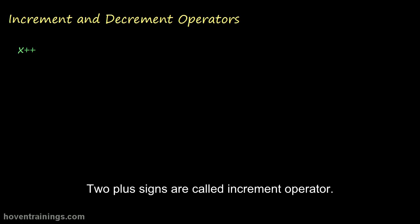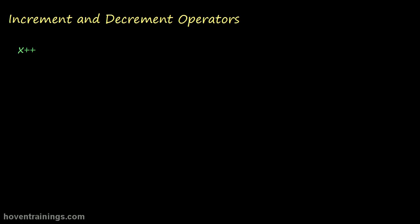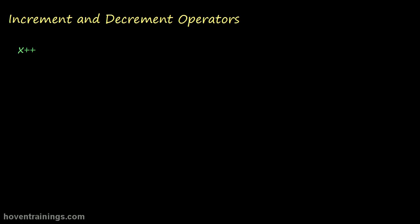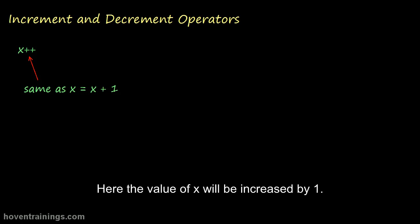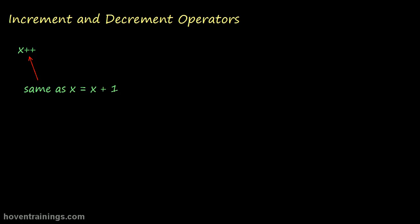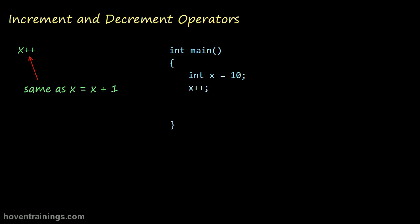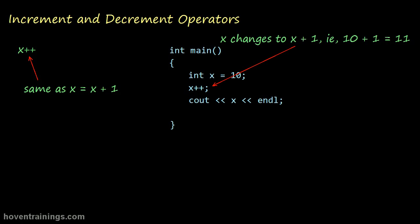Two plus signs are called the increment operator. The increment operator is used to increase the value by 1. Here the value of x will be increased by 1. The displayed value would be 11.